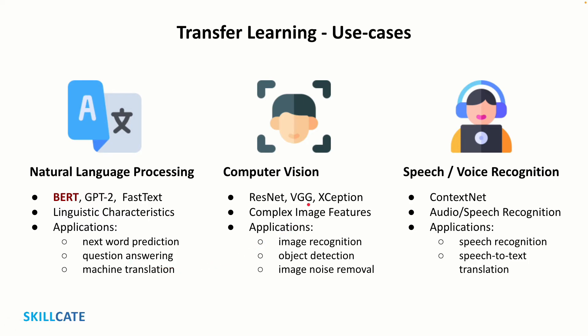In computer vision, transfer learning is commonly used in image recognition, object detection, image noise removal, and other image-related tasks. And in speech recognition, when we say Alexa or Hey Google, the primary AI model developed for speech recognition is busy at the backend processing our commands. By the way, in the next part of this series, I'll be demonstrating the insane capabilities of the BERT model to you, which has shown superhuman performance in its language understanding.